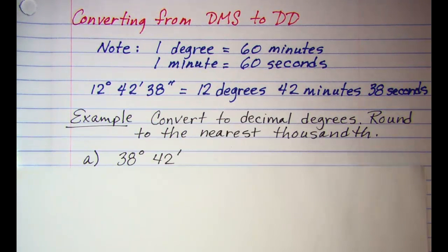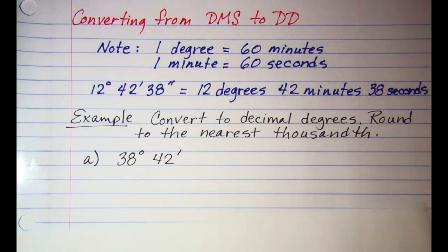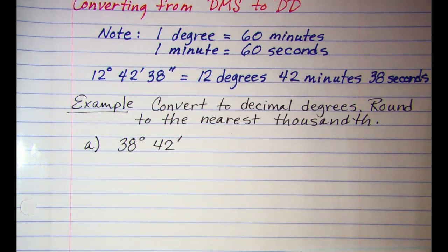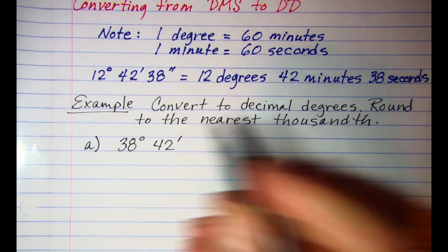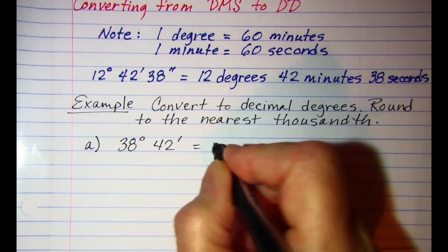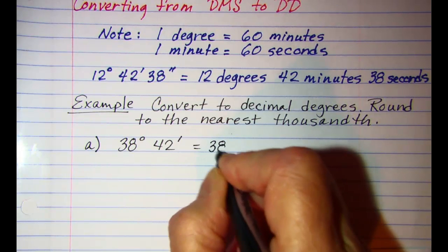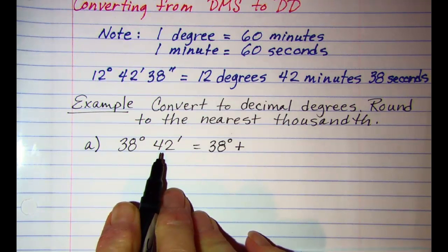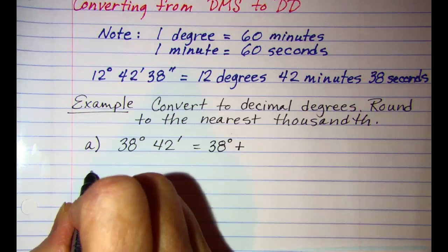Our first example we are asked to convert to decimal degrees and then round to the nearest thousandth. So 38 degrees and then 42 minutes we want to convert.